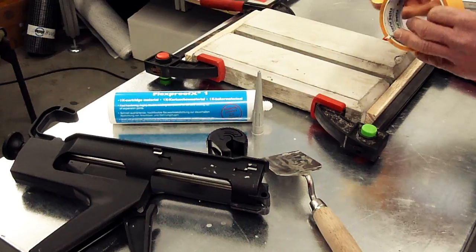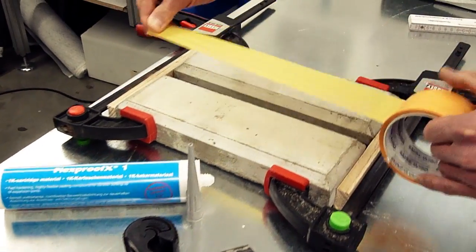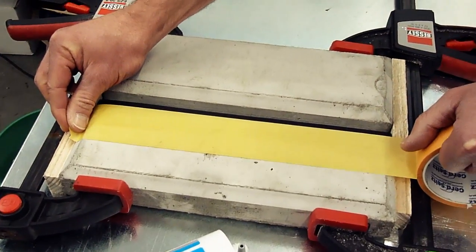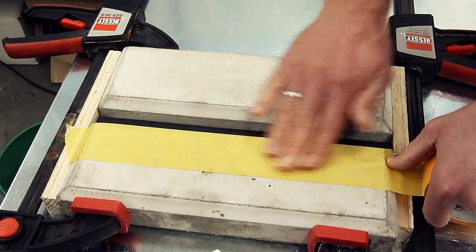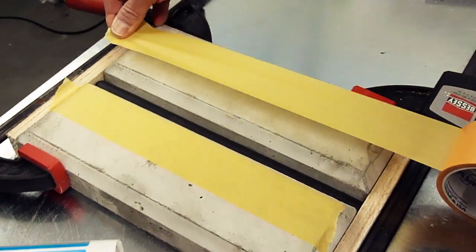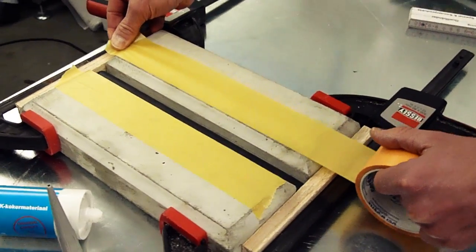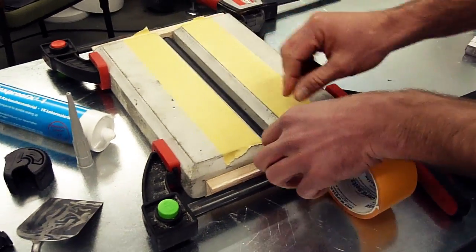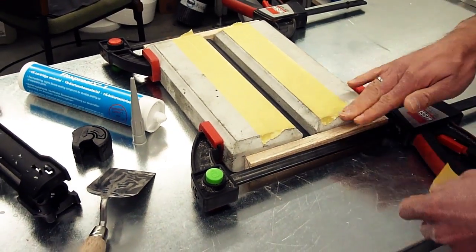To get a neat result afterwards, we recommend to apply a tape on the edges of the joint, which of course is removed after installing the sealant mass.